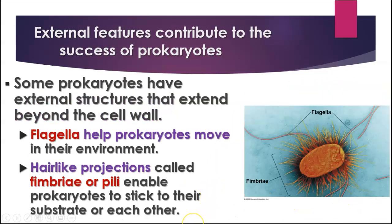Some prokaryotes have external structures that extend beyond the cell wall. Flagella are long whip-like structures that help prokaryotes move around in their environment — they basically spin like a propeller. They also have hair-like projections called fimbriae or pili that help them stick to their substrate or to each other, kind of like Velcro. These are shorter structures as opposed to the longer, more whip-like flagella.